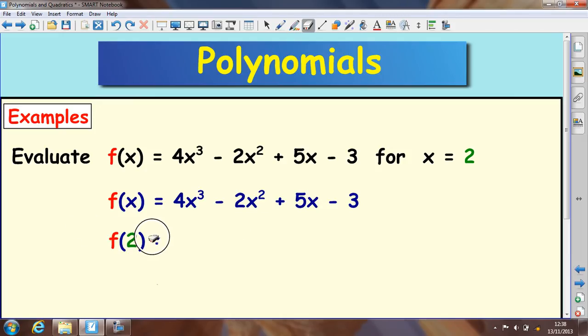So, substituting 2 into this, you get f(2) = 4 times 2³ minus 2 times 2² (sorry), plus 5 times 2, take away 3.